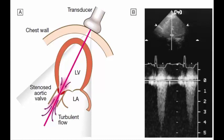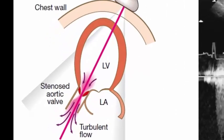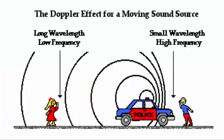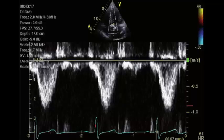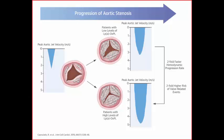Doppler echocardiography depends on the Doppler principle: sound waves reflected from moving objects such as intracardiac red blood cells undergo a frequency shift. Velocity of blood increases across stenotic valves, and when this velocity is picked up by the Doppler it gives us an idea about the degree of stenosis. The information can be displayed as a velocity-against-time plot at a particular point, or as a two-dimensional real-time picture with color-coded flow. Doppler echo can be used to detect stenosis and regurgitation across valves.